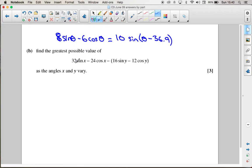Part 3 wants us to work out the greatest possible value that this can be for particular angles x and y. For this, we need to realize that this is kind of like 8sinθ - 6cosθ.